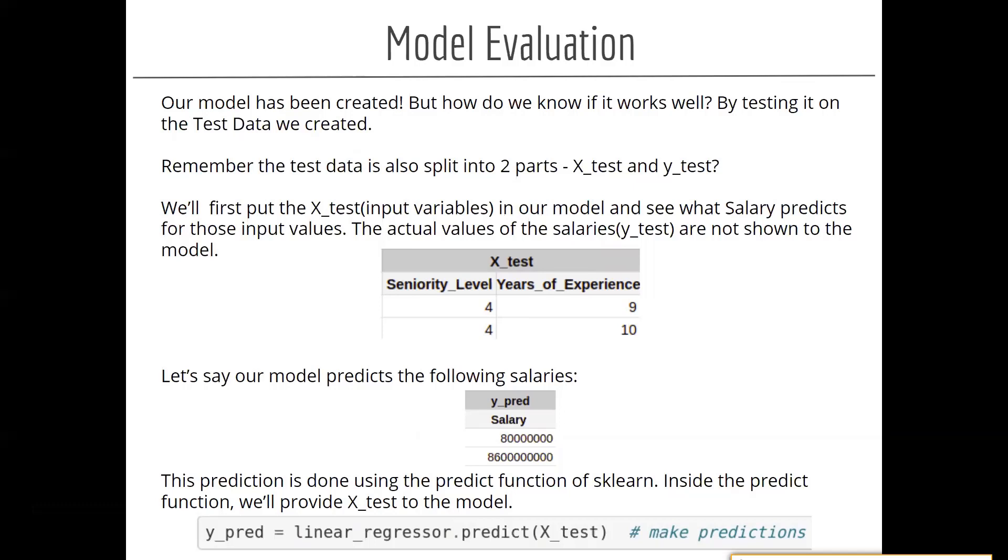X_test has only our input features, and y_test has our target variable. So always the HR team, what they do is they just feed in those input features, that is nothing but seniority level and years of experience, and they expect the salary to be predicted from our model.